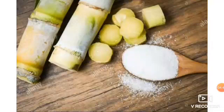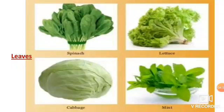The sugar that we use is obtained from sugarcane. Now look at these: spinach, lettuce, cabbage, and mint. You must have seen them in your kitchen. But do you know which part of the plant these are? Yes, these are the leaves of some plants. We also eat the leaves of some plants. So, children, we can see that we eat different parts of the plant, like roots, stems, leaves, fruits, etc. Every part of the plant is useful to us.